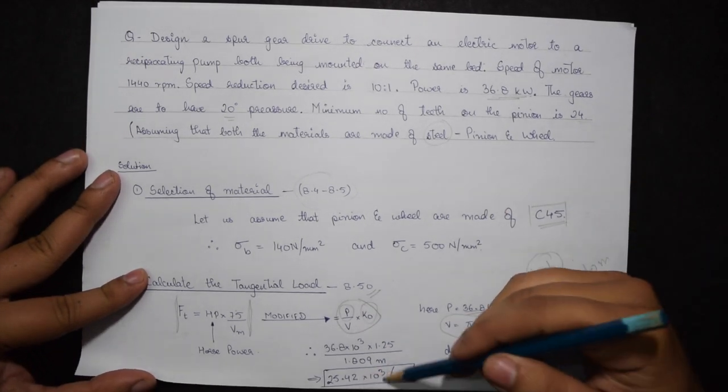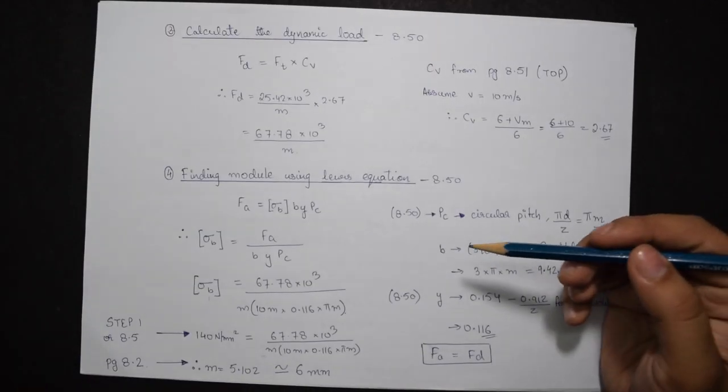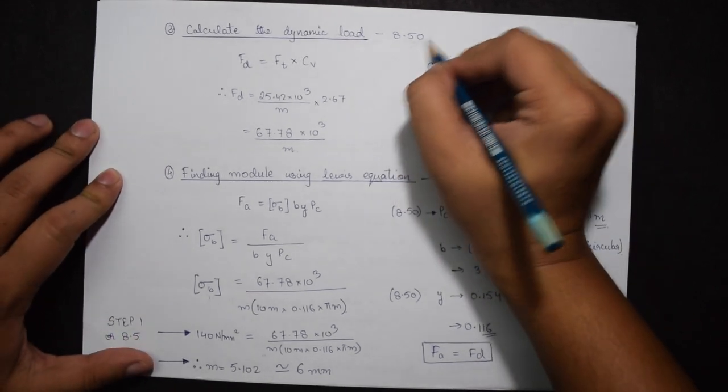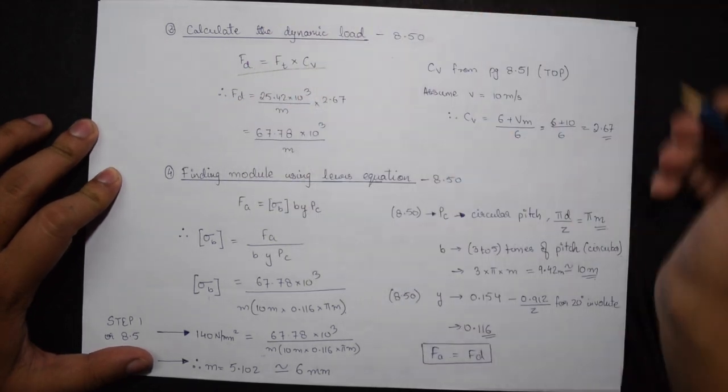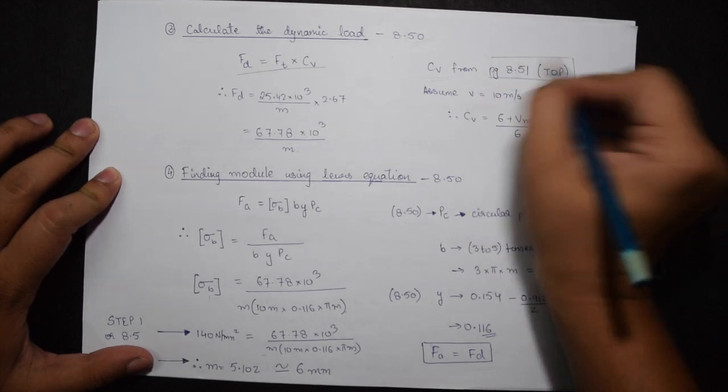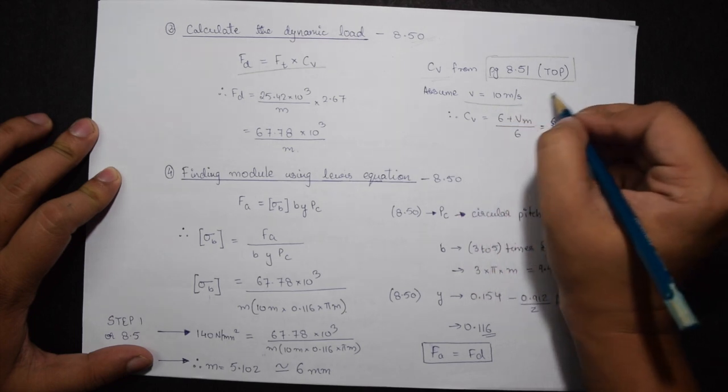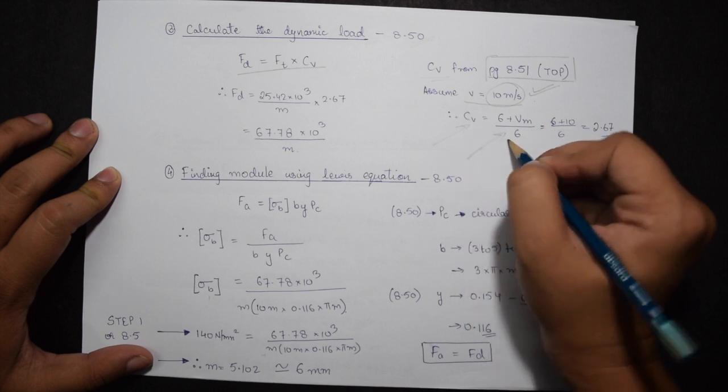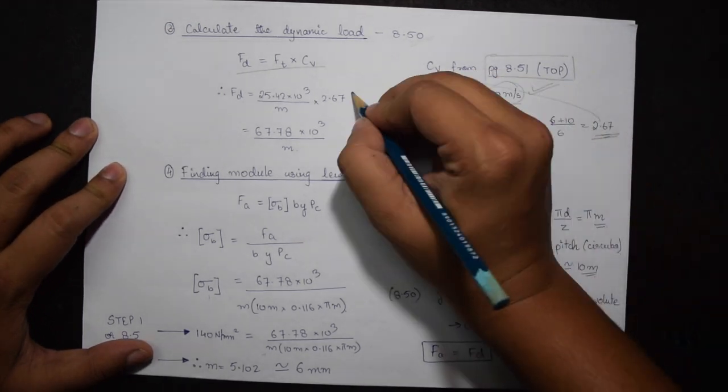Carrying on, I have to find the dynamic load given on page 8.50. FD equals FT times CV. Now CV can be calculated from a formula given on page 8.51 at the very top. Let us assume here that V equals 10 meters per second, therefore CV equals 6 plus VM by 6, that gives us 2.67.